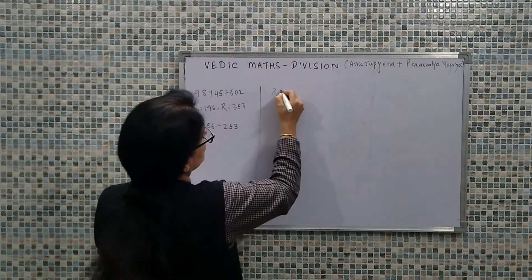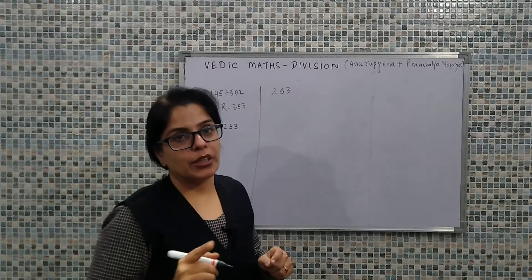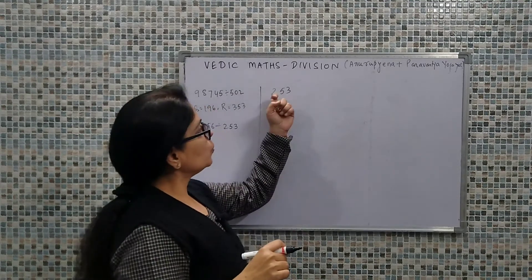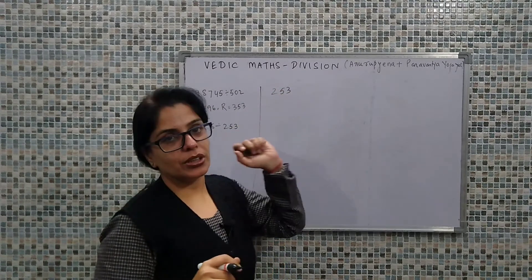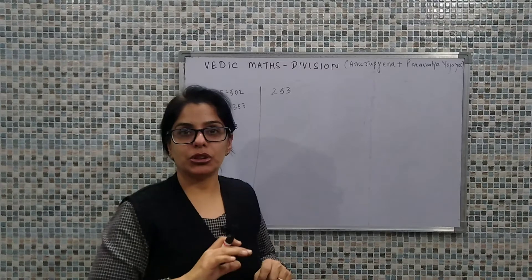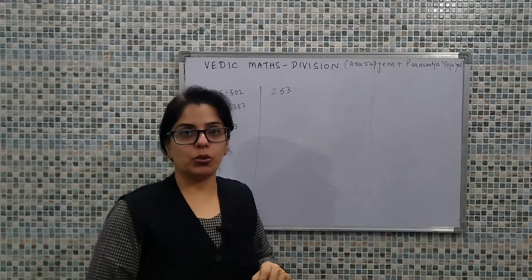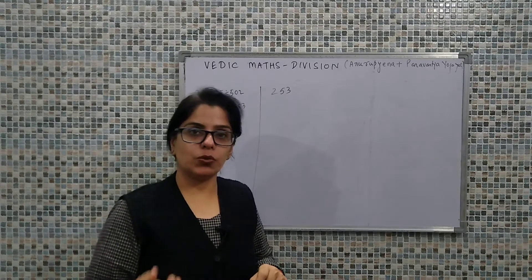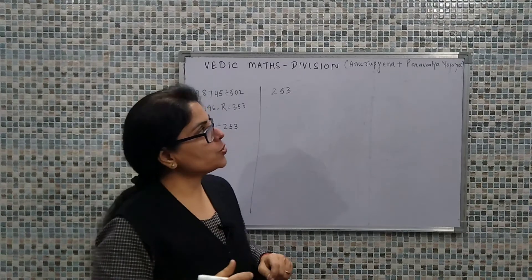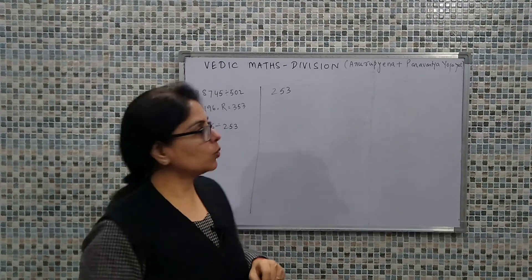We start with the next question, that is 253. When we have 253, we could use Dhvajank - the flag value would be 2, dhvaj could be 53. I shared another video with all possible combinations using Dhvajank with single digit, two digit, or more. But if we want to do this question using Anurupyena and Paravartya Yojiyat, I'll show you.